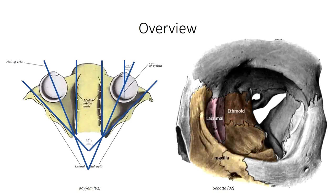The medial orbital wall is composed of the maxillary bone anteriorly and the ethmoid bone posteriorly, with the lacrimal bone sandwiched between. The sphenoid bone also contributes to the most posterior aspect of the medial wall. The medial wall is thin and weak, in particular along the ethmoid bone, due to the presence of the ethmoidal air cells. Within the medial wall is the lacrimal groove or fossa, which houses the lacrimal sac, with implications in tear drainage. The medial wall is also the attachment point of the trochlea, which alters the line of pull for the superior oblique muscle.